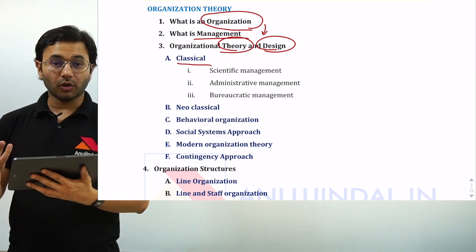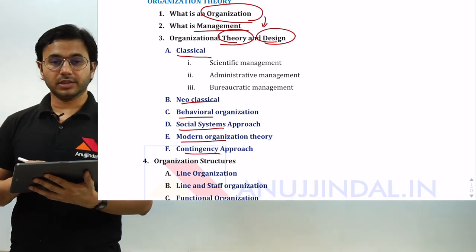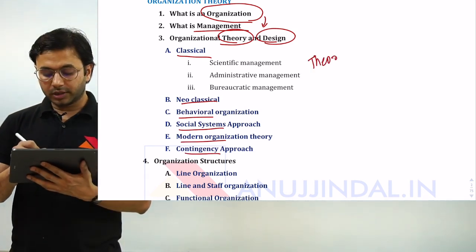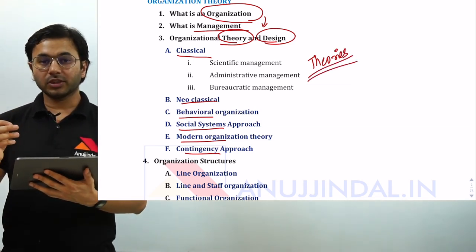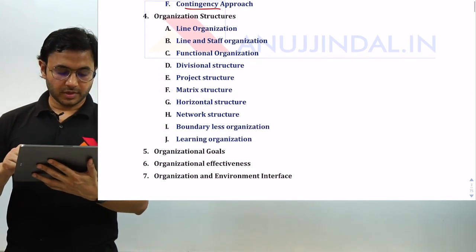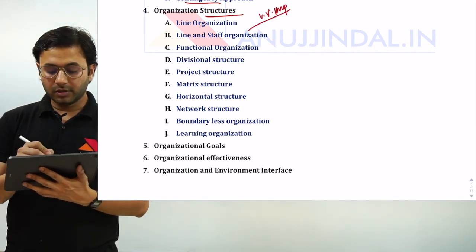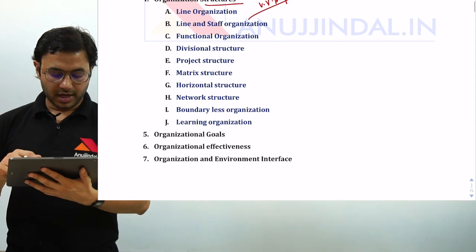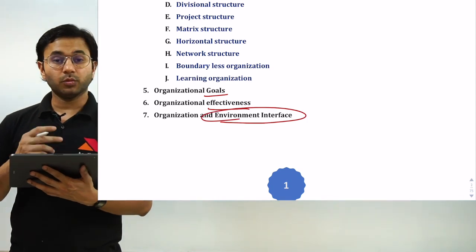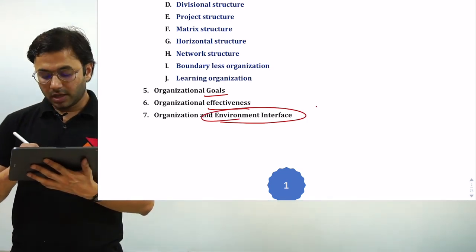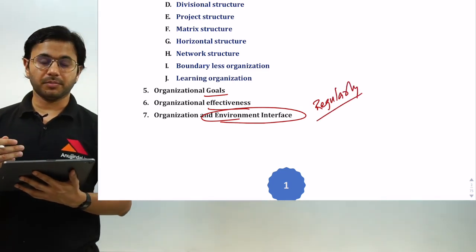There are various theories on organization theory: classical, neoclassical, behavior, social systems, modern, and contingency. These are different approaches on how theorists considered or read an organization. Then you have organization structures, which are very important — questions are regularly asked from this. And finally, we talk about organizational goals, effectiveness, and environment interface, which is very important and regularly asked because it is a developing study.